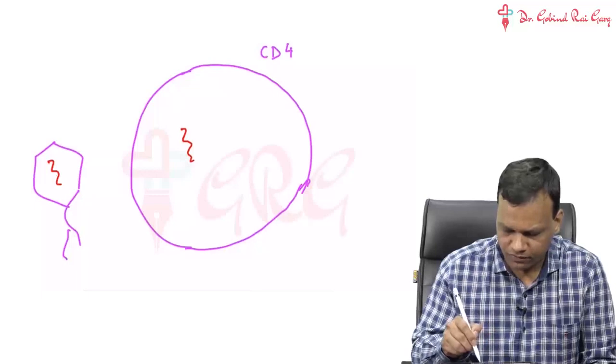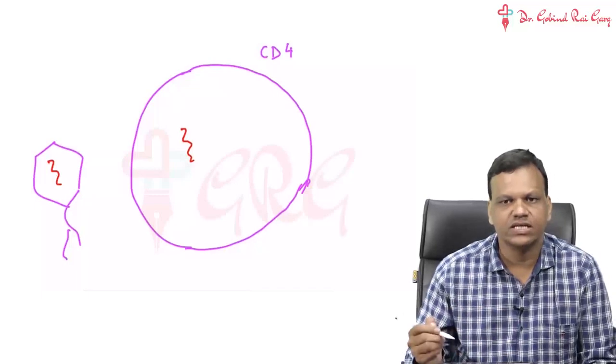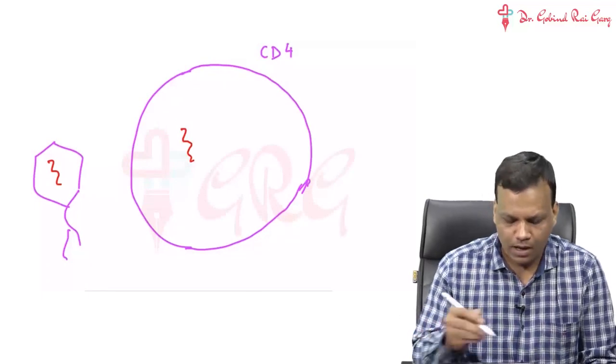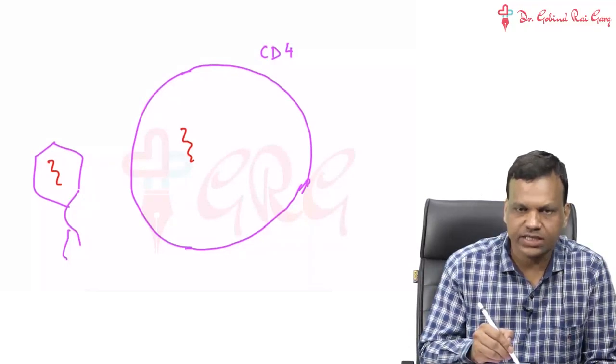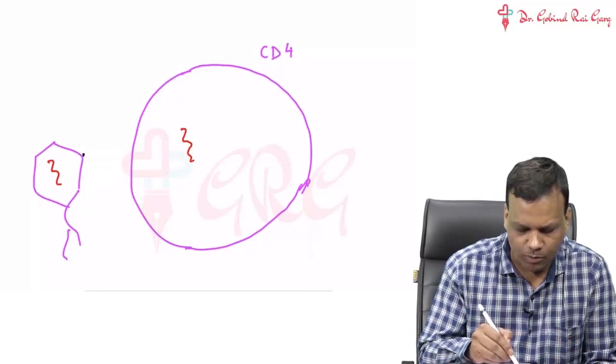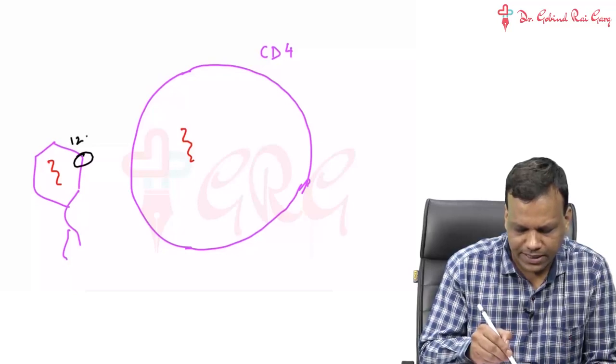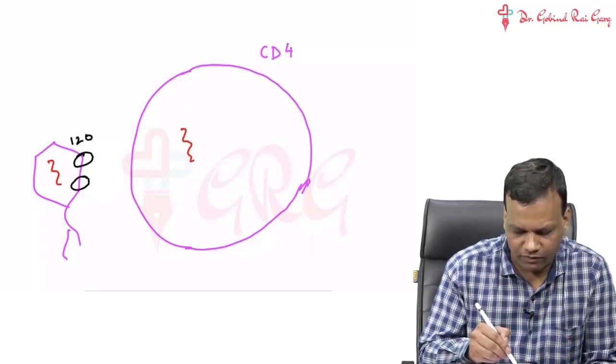How does the fusion occur? How do the HIV and CD4 join, fuse? On the surface of HIV, there are two glycoproteins: one is called glycoprotein 120 and the second is called glycoprotein 41.